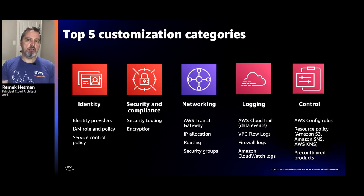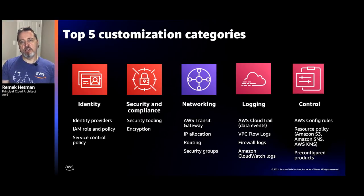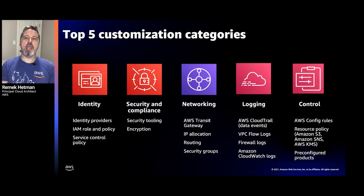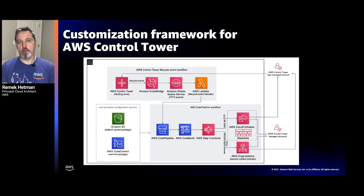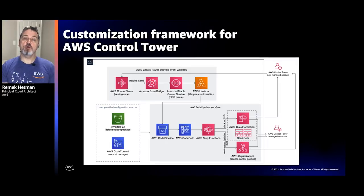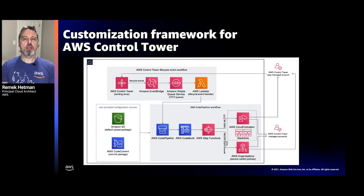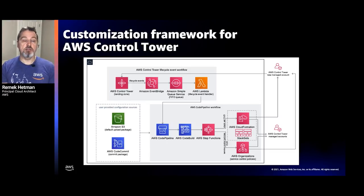After creating CloudFormation templates for all those customizations, the next step is how to deploy, manage, and scale them — and especially how to automatically apply them for new accounts. For this, we use Customizations for Control Tower (CFCT). CFCT was created by AWS Builder Solutions and is publicly available. It must be deployed in your management account — the account where AWS Control Tower was deployed — because it uses the Control Tower execution role to deploy stacks across all accounts. CFCT can deploy CloudFormation templates and Service Control Policies.